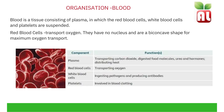Plasma transports carbon dioxide, digested food molecules such as glucose and amino acids, urea and hormones. Red blood cells transport oxygen. White blood cells ingest pathogens and produce antibodies and antitoxins. Platelets are involved in blood clotting.